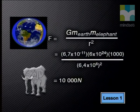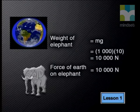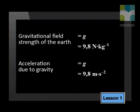The force of the Earth on the elephant is given by 6.7 times 10⁻¹¹ times the mass of the Earth times the mass of the elephant, all over the radius of the Earth squared. When we work this out, we find that the Earth attracts the elephant with a force of about 10,000 newtons — which is also what an elephant weighs. When we calculate the force of the Earth on an object on Earth, we are actually finding its weight. When we talk about the gravitational field strength of the Earth, we are actually talking about its acceleration due to gravity. These values and their names are interchangeable.